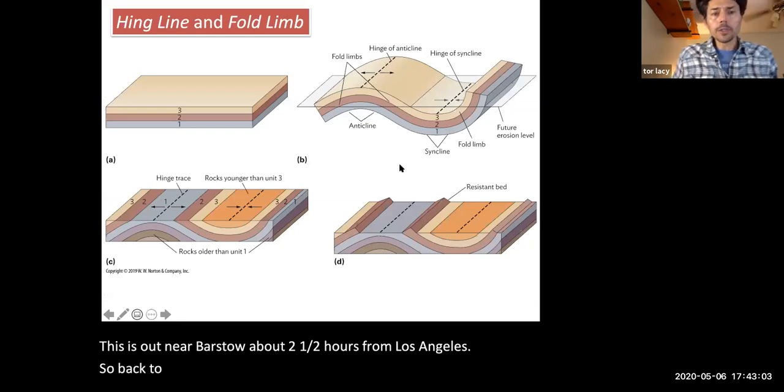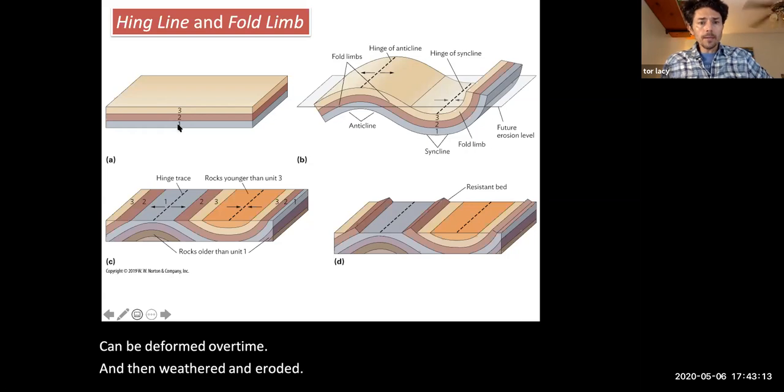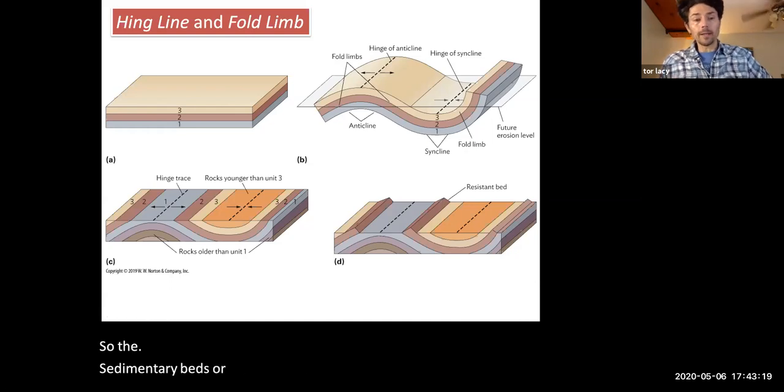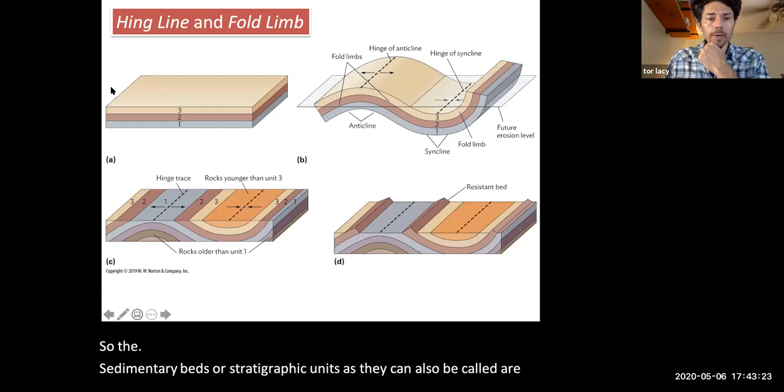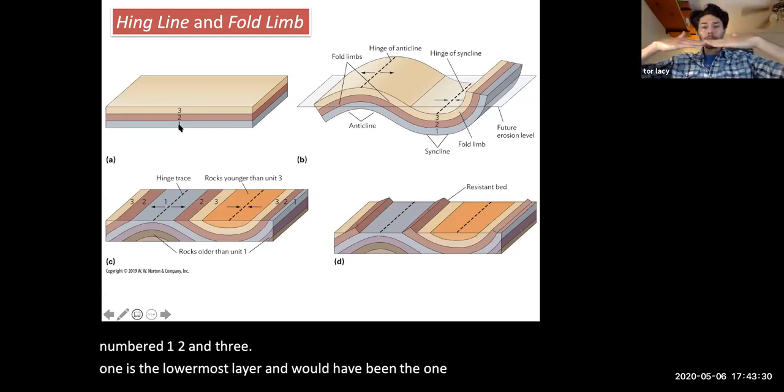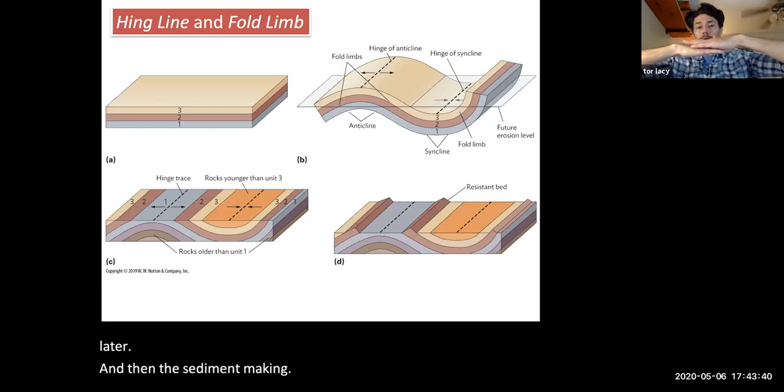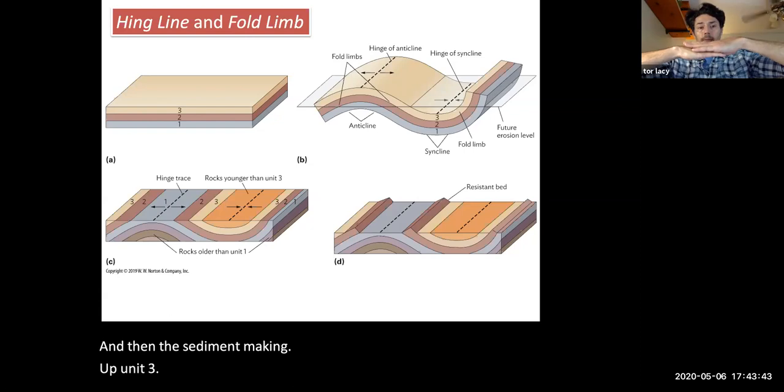So back to this illustration here, showing us how strata can be deformed over time and then weathered and eroded. So the sedimentary beds or stratigraphic units, as they can also be called, are numbered one, two, and three. One is the lowermost layer and would have been the one that formed first. Then the sediment making up bed two was deposited on top of that later, and then the sediment making up unit three were deposited after that. So three is the youngest of the three there, then two, then one being the oldest.